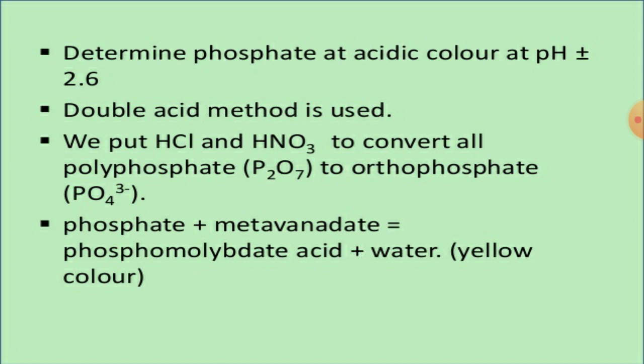To determine phosphate, the acidic color at pH ±2.6 uses the double acid method — hydrochloric and nitric acids are added to convert all polyphosphates (P₂O₇) to orthophosphate (PO₄³⁻). Phosphate reacts with metavanadate to form phosphomolybdic acid plus water, producing the yellow color. Thank you so much.